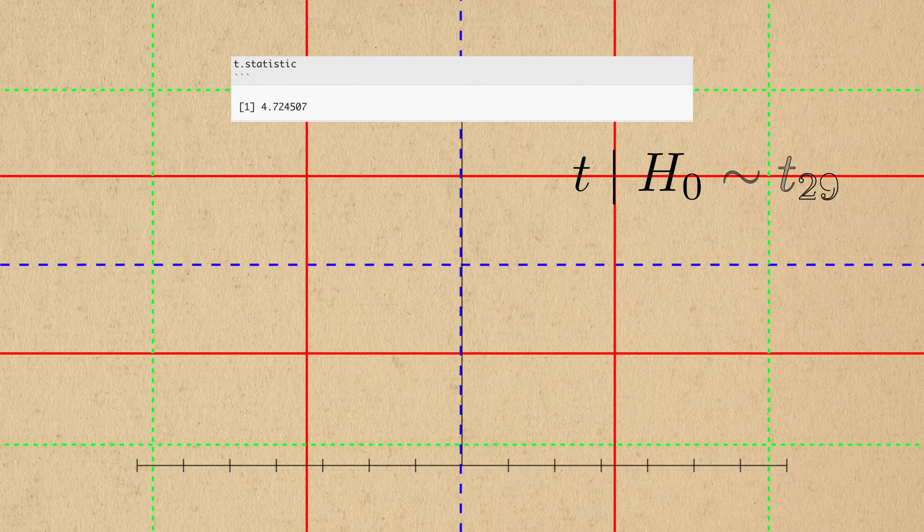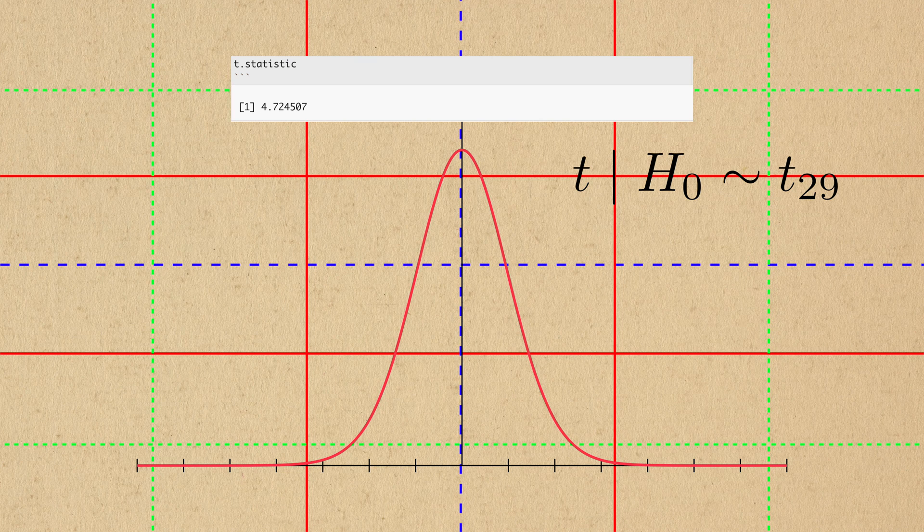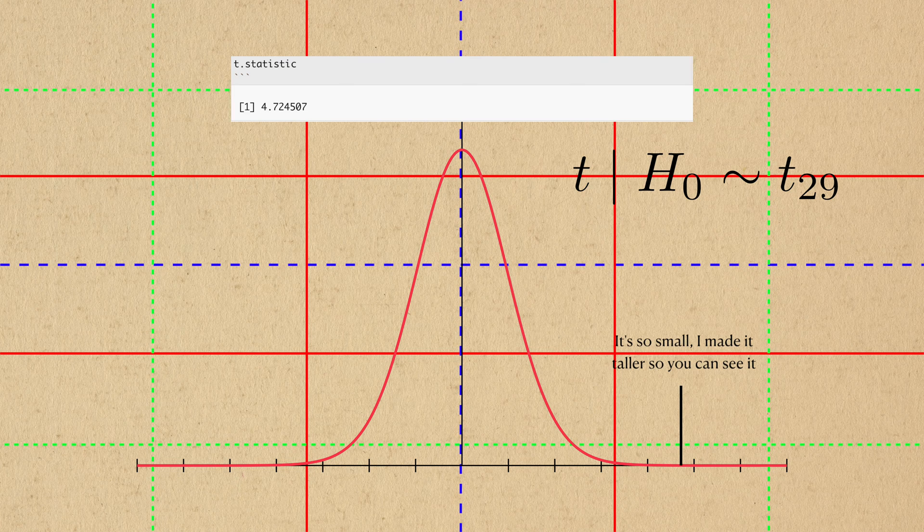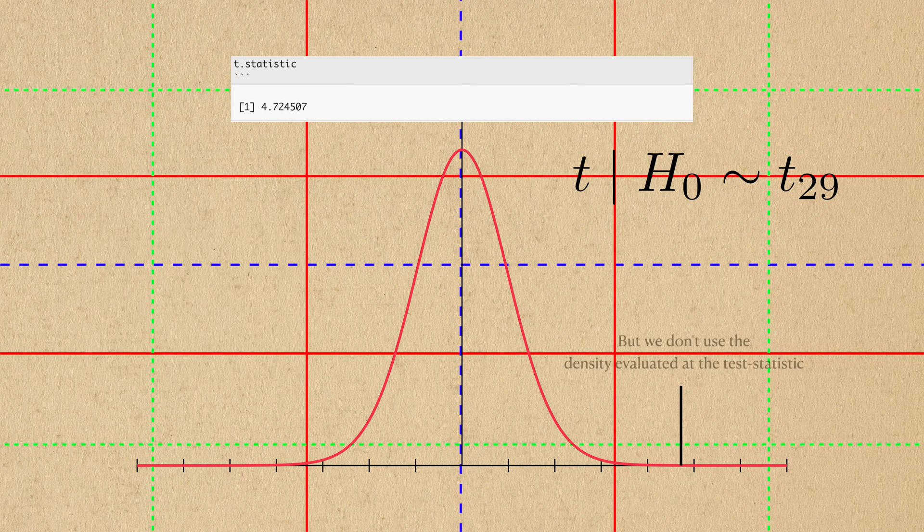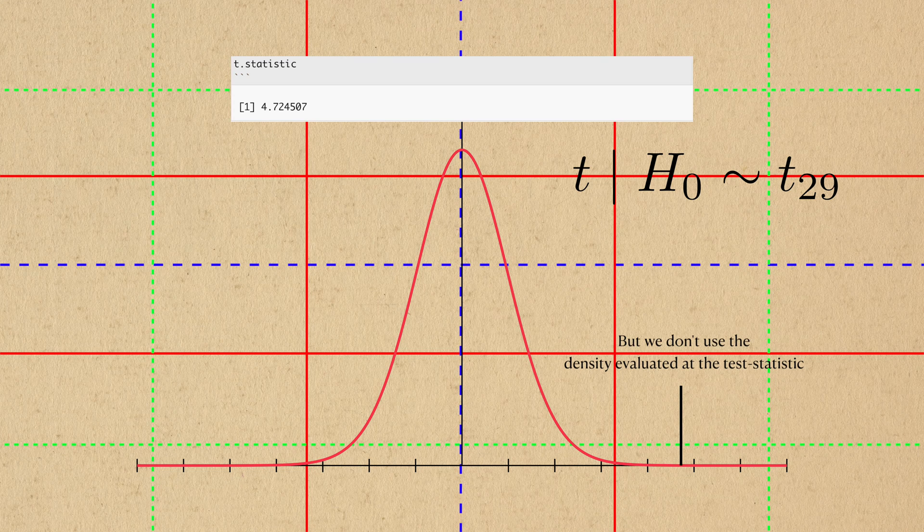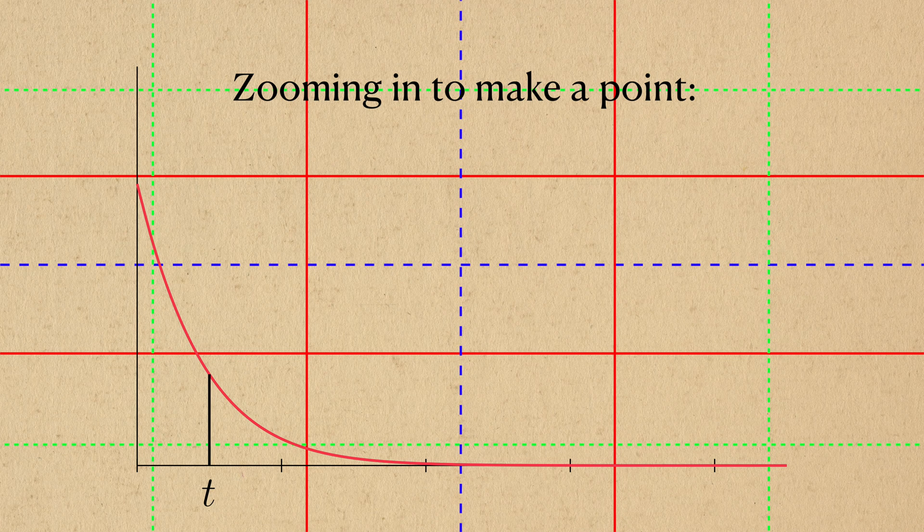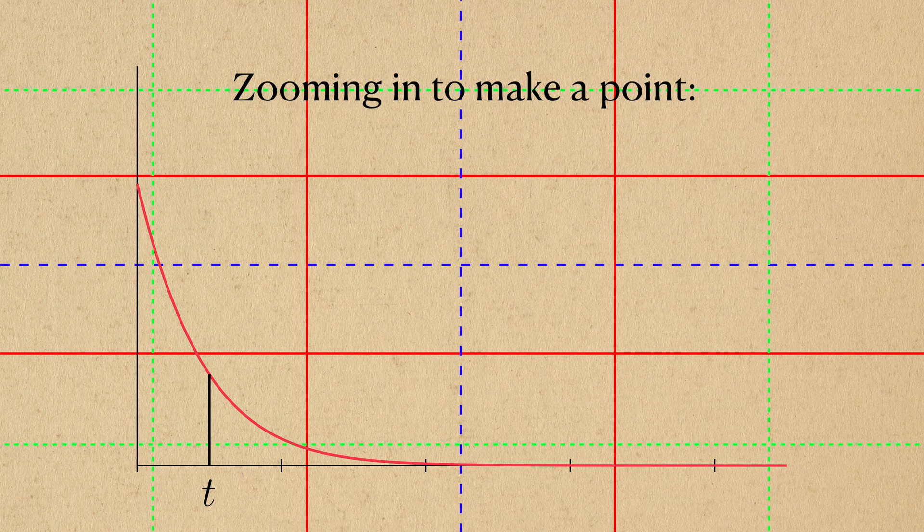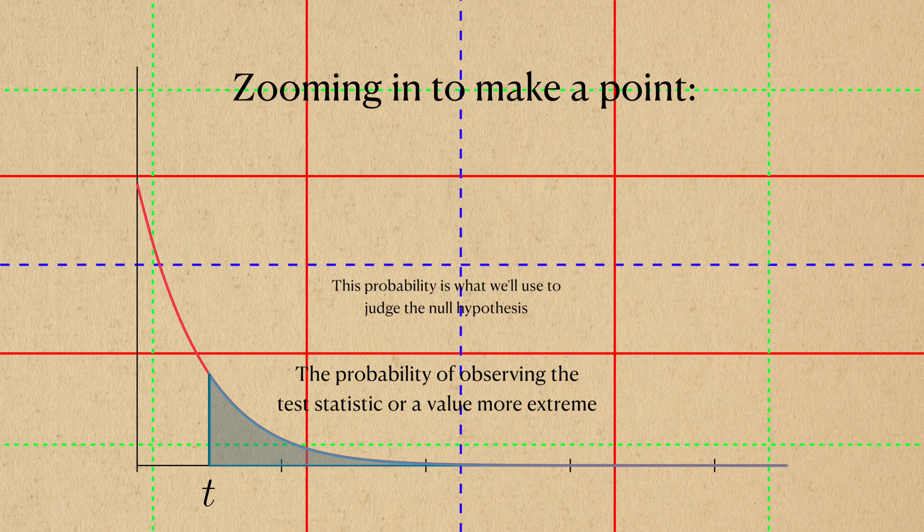Now, we need to see where the test statistic falls within the null distribution. If this is the null distribution, then this is where the test statistic would fall. You can see it already looks unlikely. Instead of using just the density evaluated at the test statistic, Fisher computed the probability of observing the statistic we calculated or something more extreme, and used this to judge the null hypothesis.